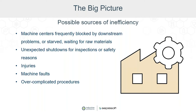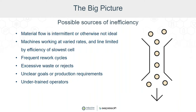Machine centers are frequently blocked by downstream problems or starved waiting for raw materials. Is your flow of material down the line frequently stopped and started because equipment is going up or down? Are you having unexpected shutdowns for inspections or safety reasons? Are there injuries on your line? That's obviously a source of inefficiency as well as a safety risk. Are there frequent machine faults? Potentially overcomplicated procedures can also be a source of inefficiency — can you twice bake a part instead of three times? Can you simplify your procedures?